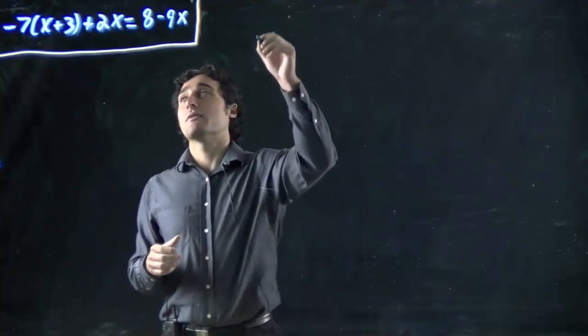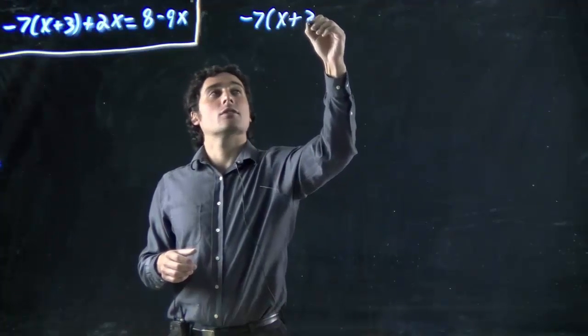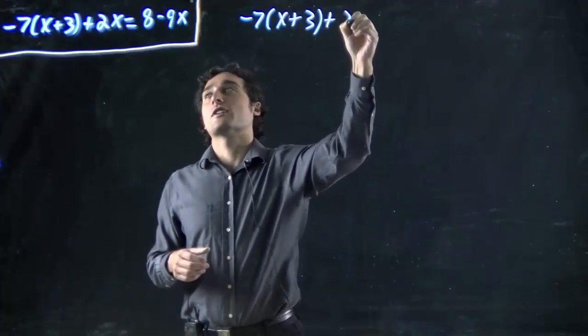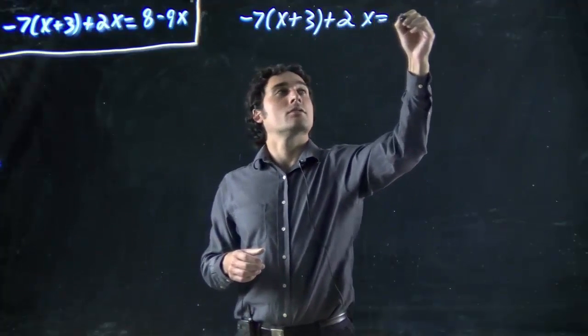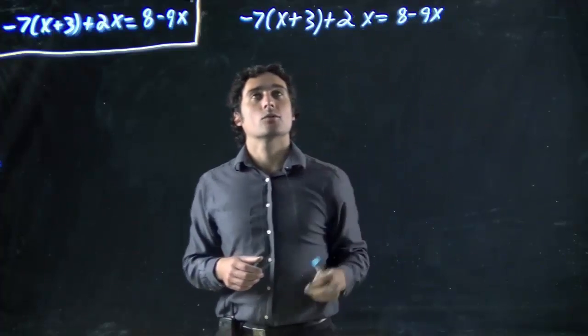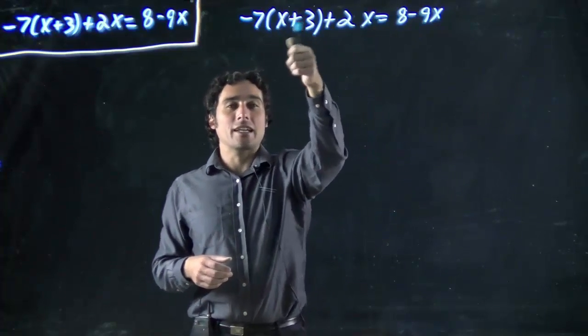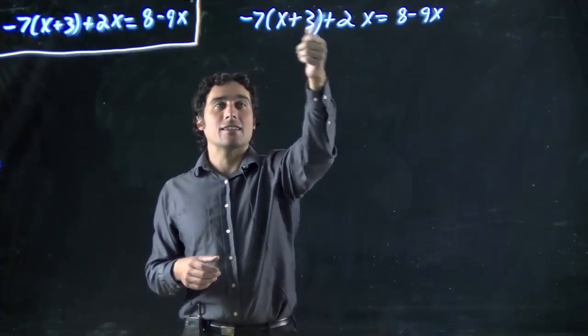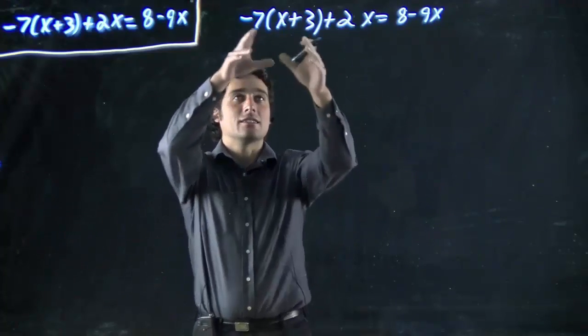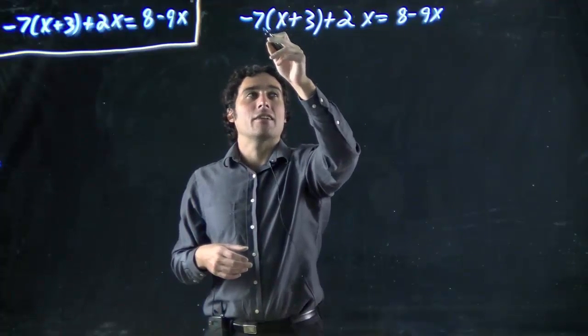So first things first, we've got our minus 7, x plus 3, just as always rewriting out our equation, so I have it right here above me. Well, if I want to combine all these terms, this bracket can't be here. I can't add this and this if the bracket is there. So, I've got to get rid of the bracket. So what do I got to do? I've got to do something with this minus 7.